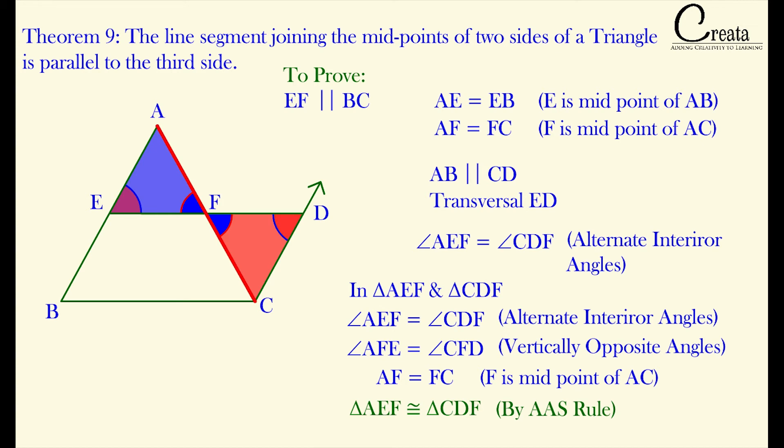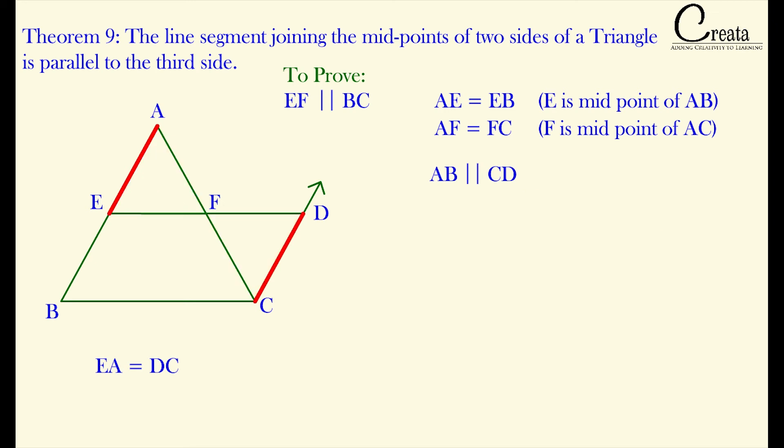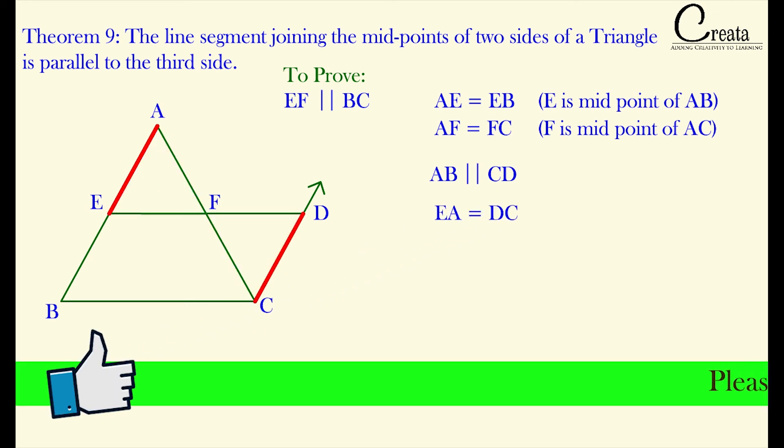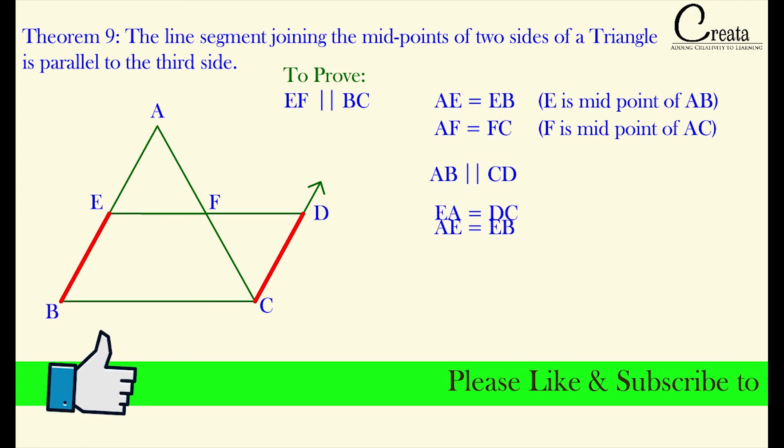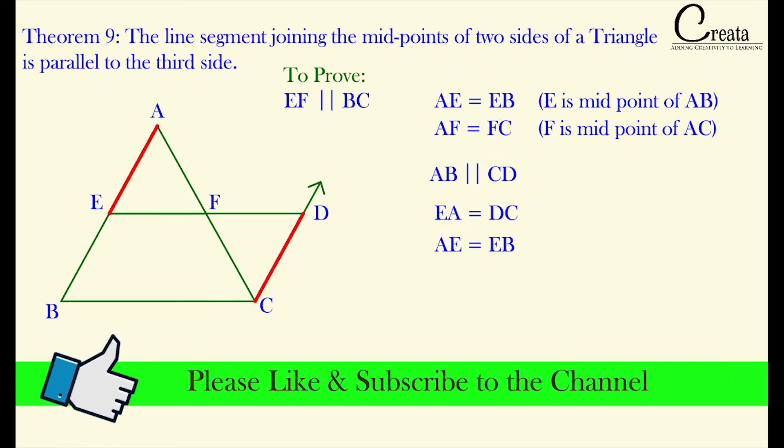If we apply the CPCT, the corresponding sides will be equal to each other. That is EA is equal to DC. Both of these line segments are equal to each other. And we also know AE is equal to EB. So can we say EB is equal to DC.